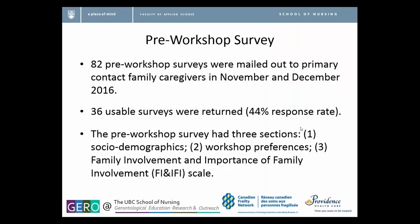The pre-workshop survey was sent out to all residents' primary family contacts prior to starting the workshop series. We sent out 82 surveys — there were 82 residents with a family member, and 8 had the public trustee as their primary contact. We received 36 usable surveys, a 44% response rate, which is actually excellent given that we did minimal follow-up. The survey had three sections: demographics, workshop preferences, and the Family Involvement and Importance of Family Involvement Scale.